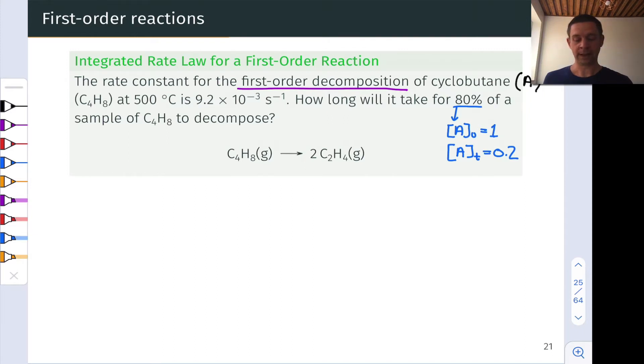The other thing here that's useful is this 80% of the sample is gone. This means that if we think about the initial concentration of C4H8, let's call it A just to keep things simple, that initial concentration being equal to one, then we're interested in the time at which the concentration of A is equal to 0.2. This corresponds to 80% of that one, say, mole per liter being gone. We also know the value of K is equal to 9.2 times 10 to the negative 3 per second. Notice those units are appropriate for first order kinetics, which is also given in the problem.